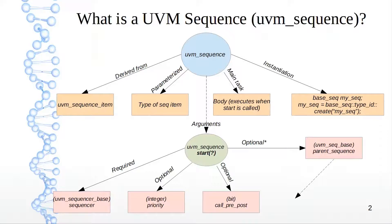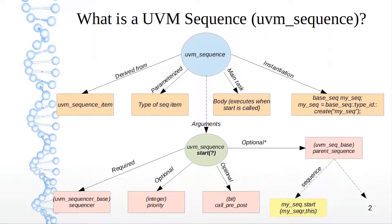When you're giving the arguments to the start task and calling it from within a sequence, you want to give the sequencer it's going to run on — in our case, my sequencer — and the parent sequence. If you're starting this sequence from another sequence, you typically say 'this' as the argument. If you call it from, say, a UVM test, which is a component, you provide the full hierarchy of the sequencer — for example, within the environment, within the agent, and then the corresponding sequencer.